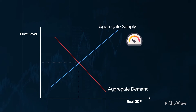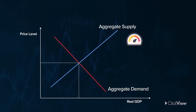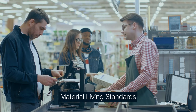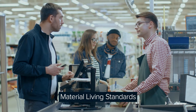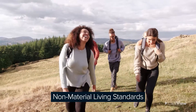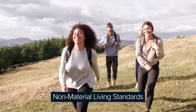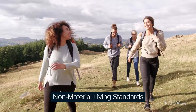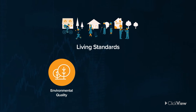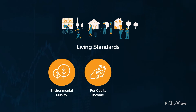As aggregate demand rises, aggregate supply must increase to keep pace with it and to ensure continued economic growth. If demand exceeds supply, the speed limit is broken and overheating occurs. High material living standards allow access to more goods and services, which requires continued economic growth. High non-material living standards include personal freedom and safety, good friends and neighbors, and a healthy environment. Living standards are influenced by environmental quality, per capita income, and wealth distribution.